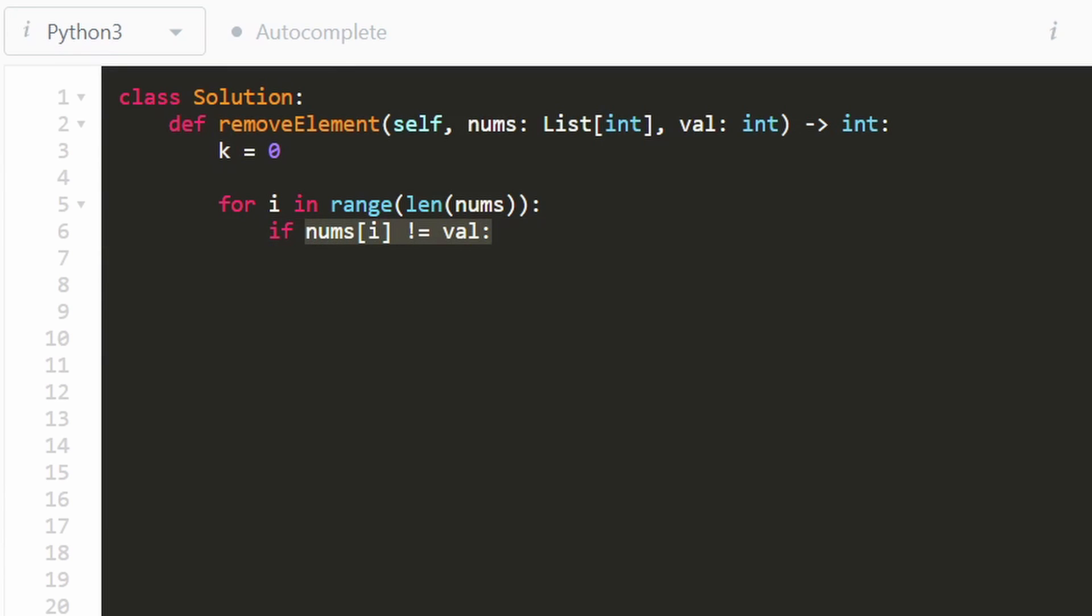But like I said, so if it's not the special value, then we can take this and then put it at our index k, which tells us where to put the next value. So we'll put nums of i at position k, and then we will increment our pointer by one. This should be an i, not a k. So then we'd increment by one. And then if it is that special value, then we won't do anything. We'll just skip it. And then once we're done with this, remember what we actually want to return is k itself. We don't want to return nums. We want to return k.